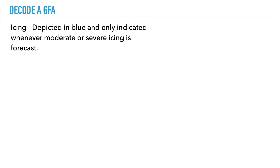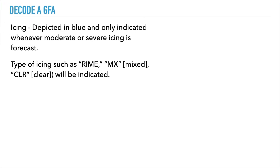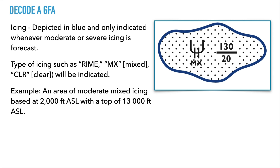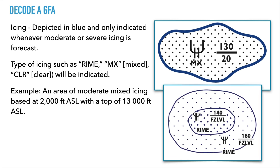Icing is depicted in blue and is only indicated whenever moderate or severe icing is forecast. The type of icing can be rime, mixed, or clear. In this example, an area of moderate mixed icing from 2,000 feet to 13,000 feet above sea level is indicated.